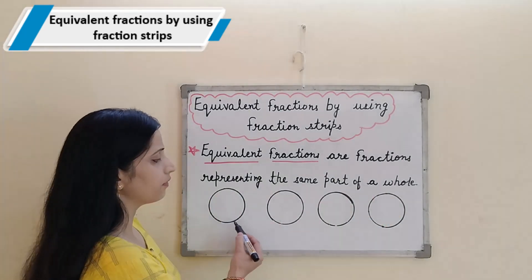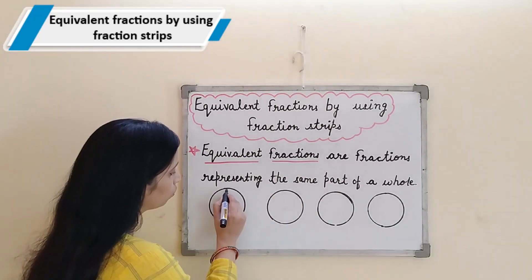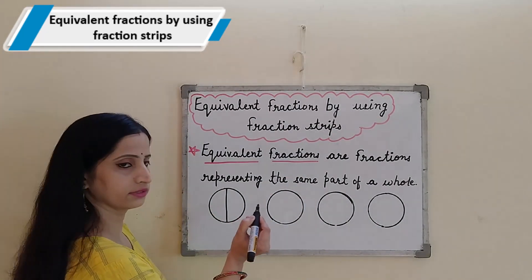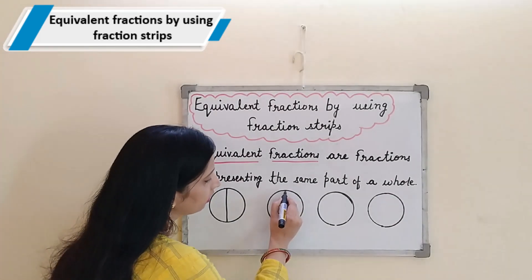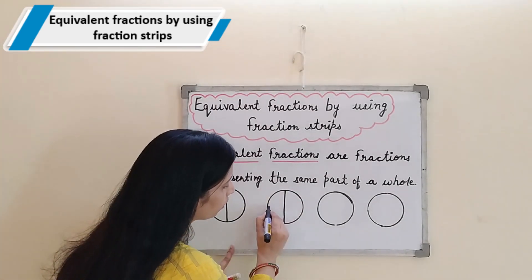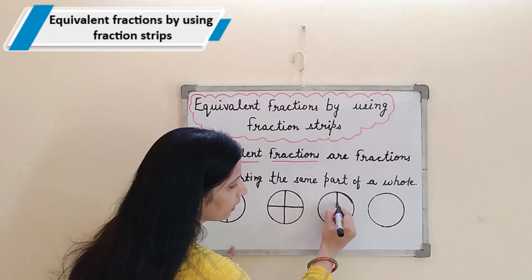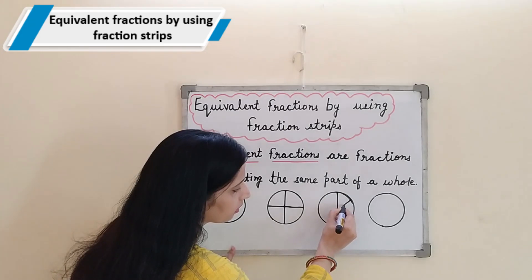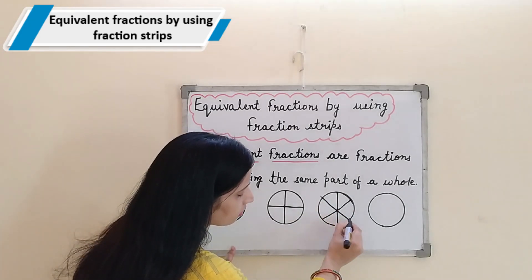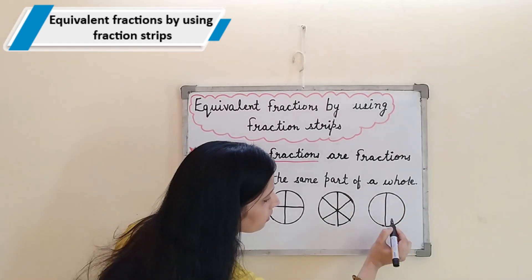As I have drawn some circles here. Now to the first circle, I am dividing it into 2 equal parts. To the second circle, I am dividing it into 4 equal parts. To the third circle, I am dividing it into 6 equal parts. And this fourth one is divided into 8 equal parts.